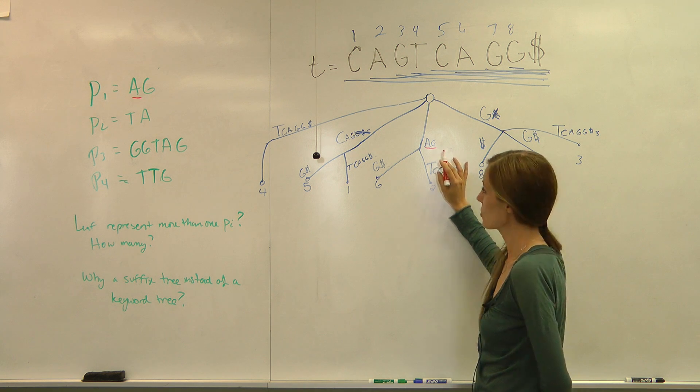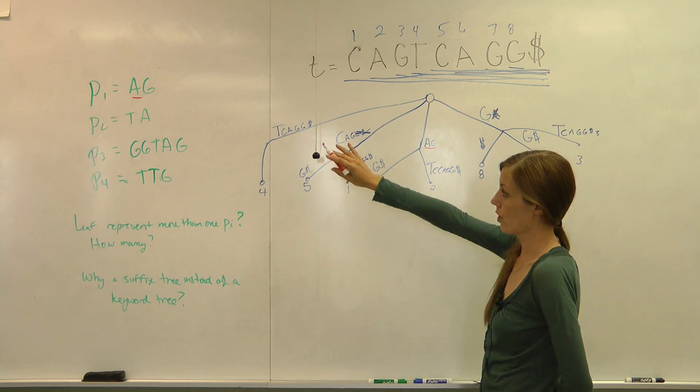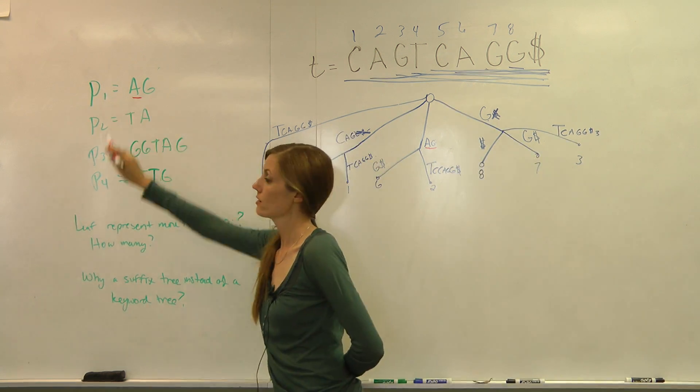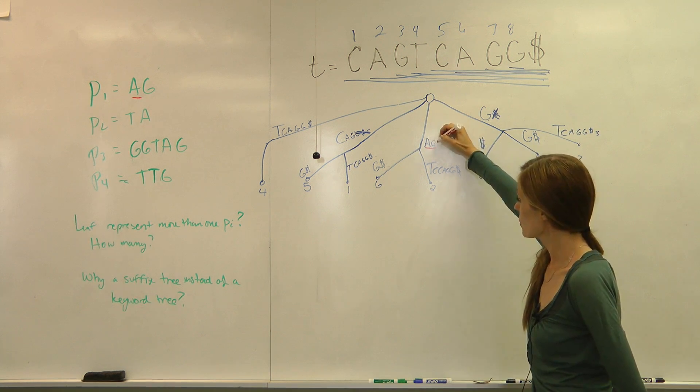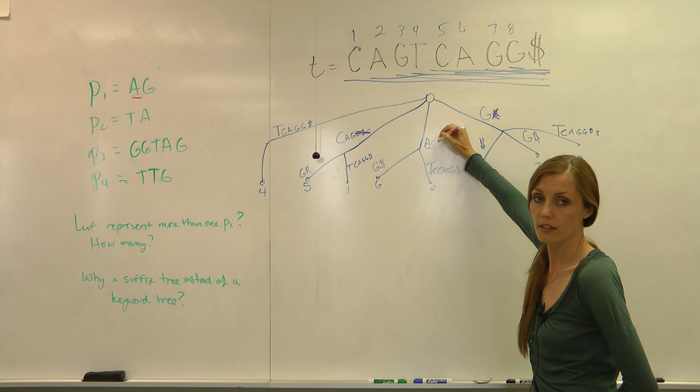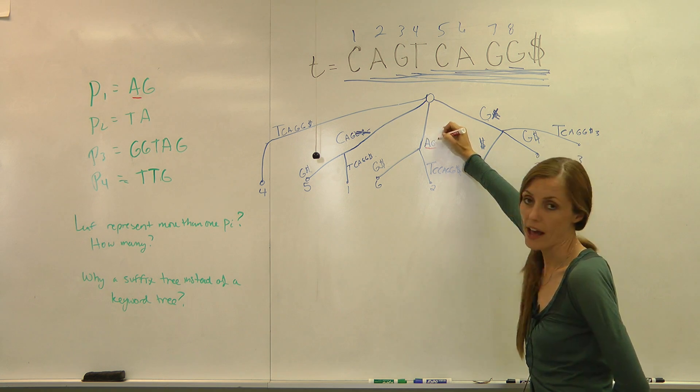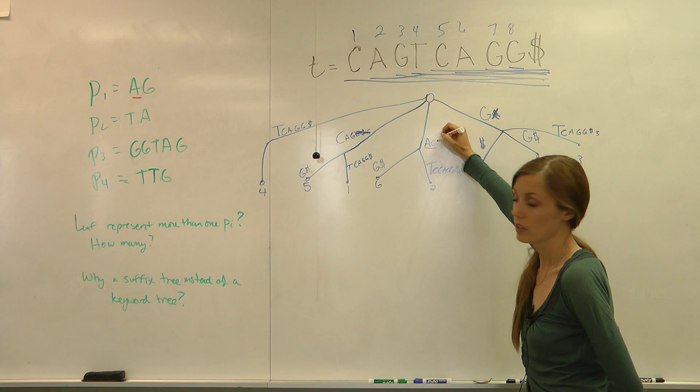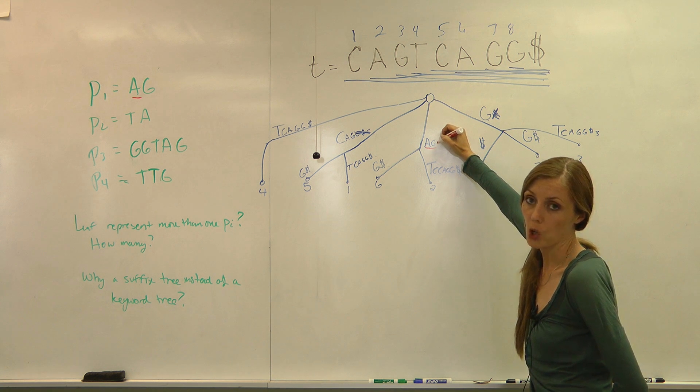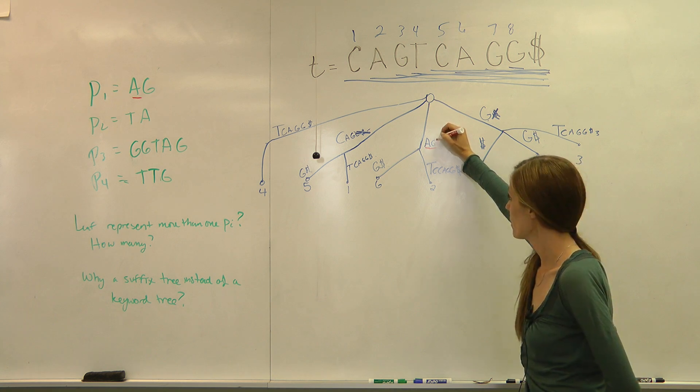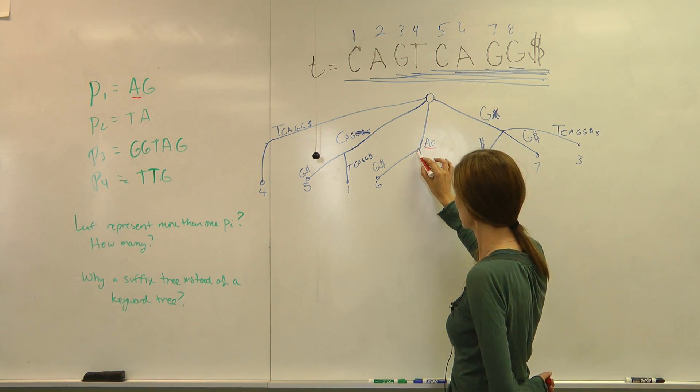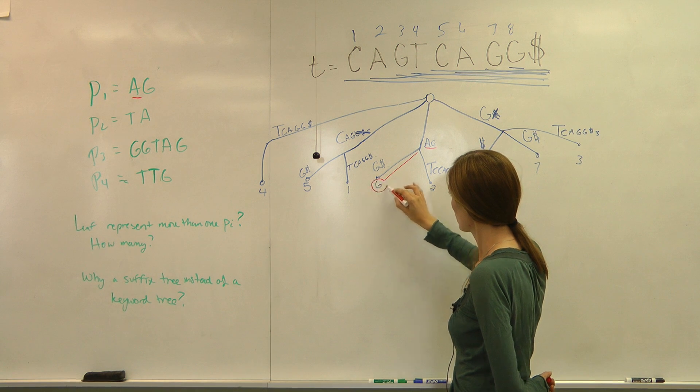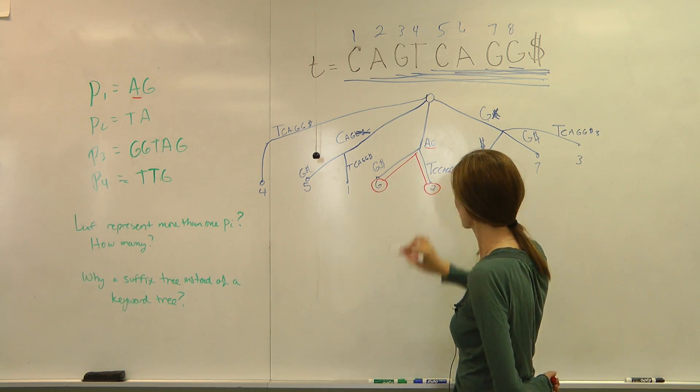If you were programming and this was a loop and you said, you know, for length of P, which is two, it would have stopped. And then you would say something like, if found, then go to leaves below this pattern. So in this case, AG exists in two places. At index six and at index two.